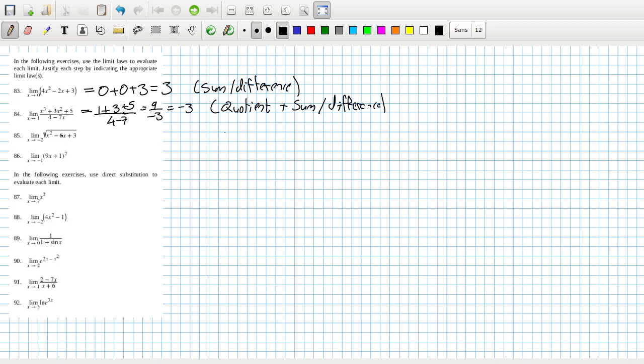This one is the root, so root sum and difference. I'm not going to keep saying sum and difference. It's the root one. Root of 4 plus 12 plus 3, that's root 19. That's because of the root and the sum and the difference.